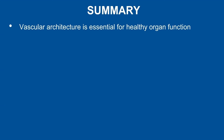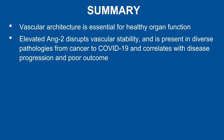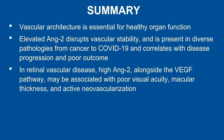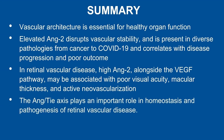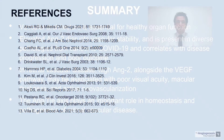In summary, vascular architecture is important across all organs. Elevated ANG2 is associated with disrupted vessel structure in diverse pathologies, ranging from cancer to COVID-19 and from neovascular AMD to DME or DR. In the retina, high ANG2 along with elevated VEGF may be associated with poor visual acuity, macular thickness, and active neovascularization. Thus, the angiopoietin-TIE and VEGF pathways play an important role in vascular homeostasis and in the pathogenesis of retinal vascular diseases. Thank you very much for your attention.